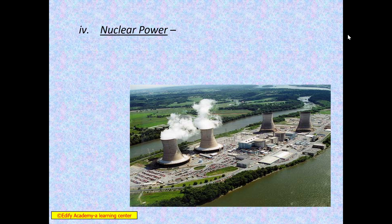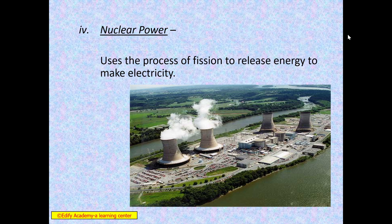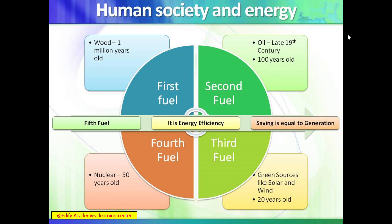This is a nuclear power plant where nuclear fission occurs; after bombardment, nuclear energy is converted into electricity. The last point is very important: we have around four different fuels — wood (about 1 million years old), oil (late 19th century, about 100 years old), green sources like solar and wind (about 20 years old), and nuclear (about 50 years old). But from my point of view there is a fifth fuel: energy efficiency, because saving is equal to generation. If we switch off lights when leaving a room, close taps when water is not needed — saving small amounts of energy is equal to generation.